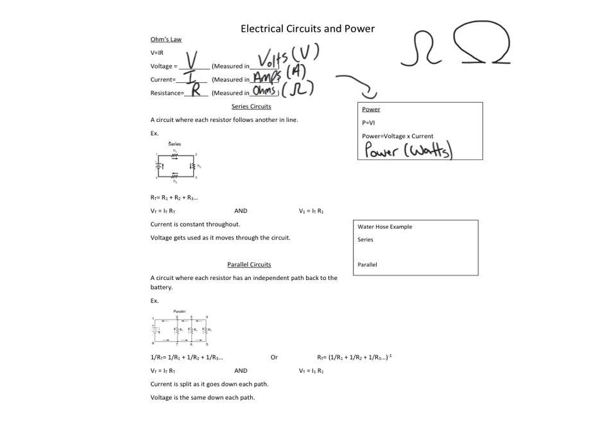There are two types of circuits. One is a series circuit. A series circuit is where one follows another. In a series circuit, the total resistance of the system is just added up — R1 plus R2 plus R3, and so on. If you want the total voltage, current, or resistance, you can use Ohm's Law. As long as you have two of them, you can find the other one.